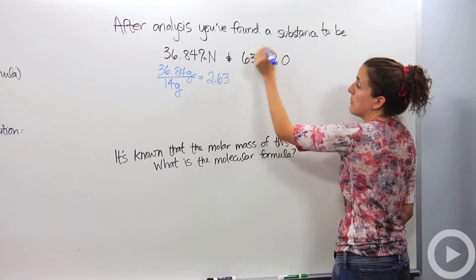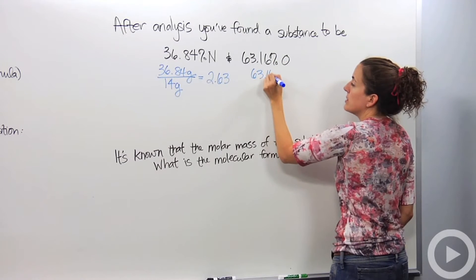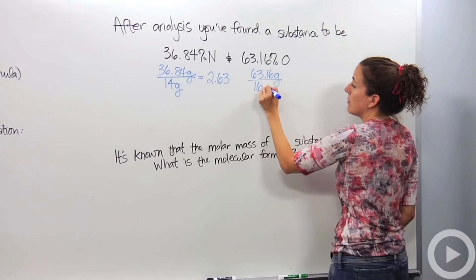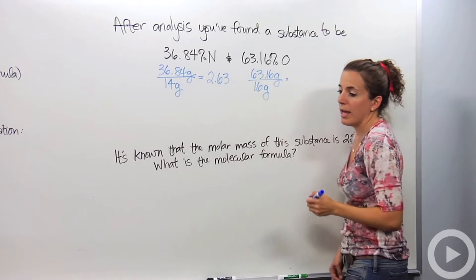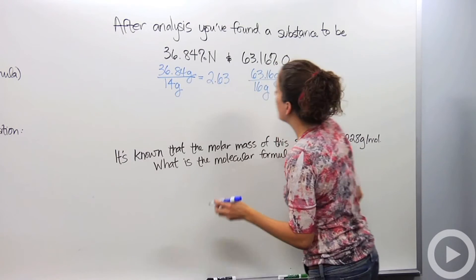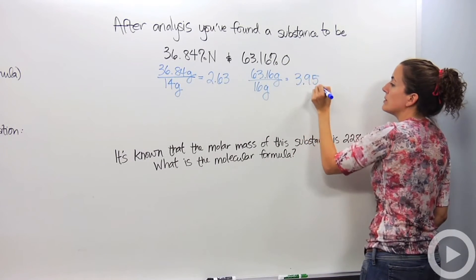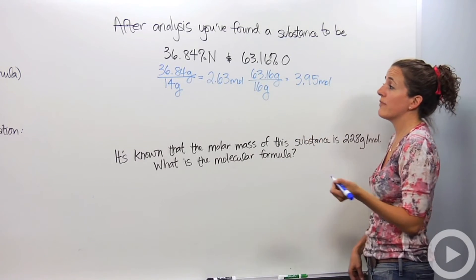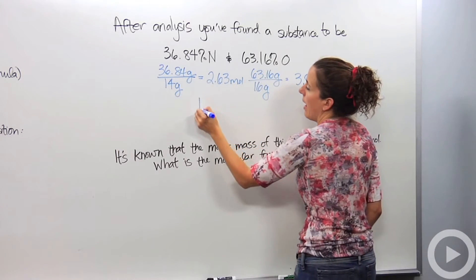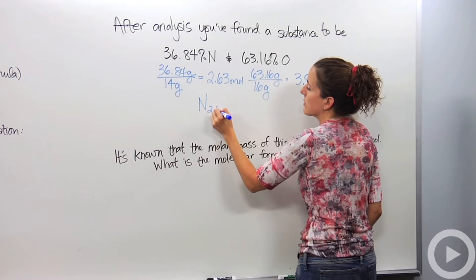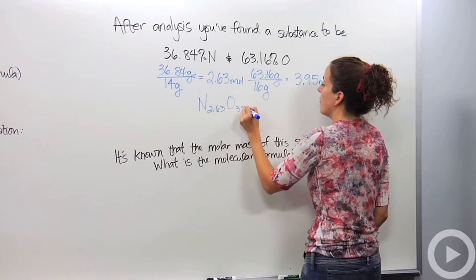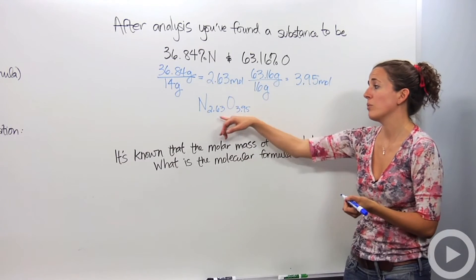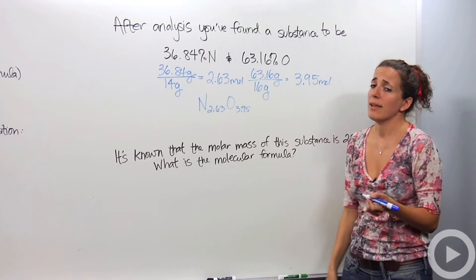I'll do the same thing with oxygen: 63.16 grams divided by its molar mass of 16 grams gives 3.95 moles of oxygen. So essentially I have N2.63 O3.95. But this is an ugly-looking empirical formula — we don't like having decimals in the subscripts.